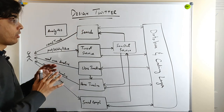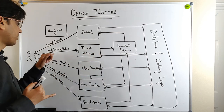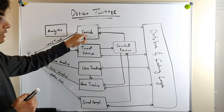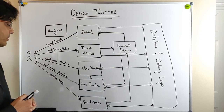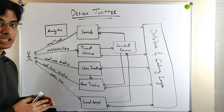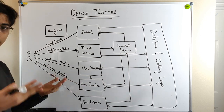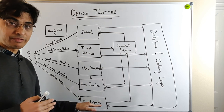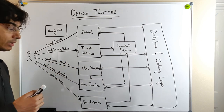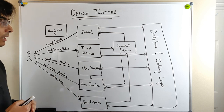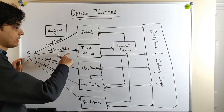This is the microservice high-level architecture of Twitter. Twitter is designed of several microservices: the tweet service receives all post, delete, or like tweet requests; the search service handles the search tweet API; the user timeline service generates the user timeline; the home timeline service generates a user's home timeline; and the social graph service implements the follow user API.